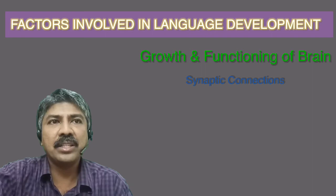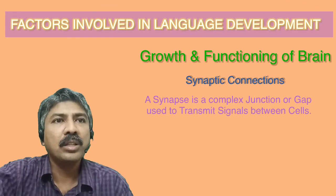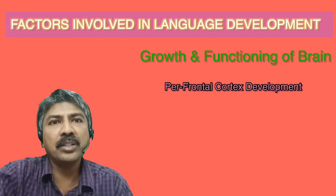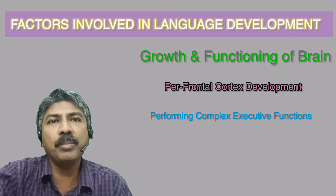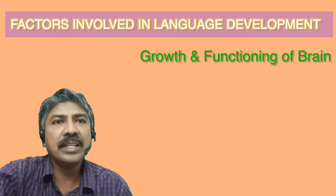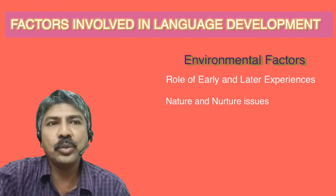A synapse is a complex membrane junction or gap used to transmit signals between cells, and this transfer is known as a synaptic connection. The third point he highlights is prefrontal cortex development during adolescence. The development and maturation of the prefrontal cortex occurs primarily during adolescence and is fully accomplished at the age of 25 years. This region of the brain helps accomplish executive functions which are very important for language. On the environmental front, factors like role of early and later experience, nature and nurture issues, and personality attributes all influence language development.